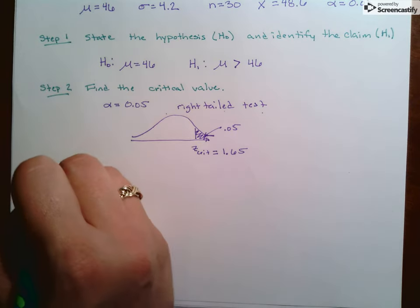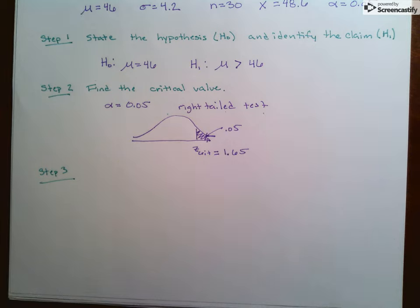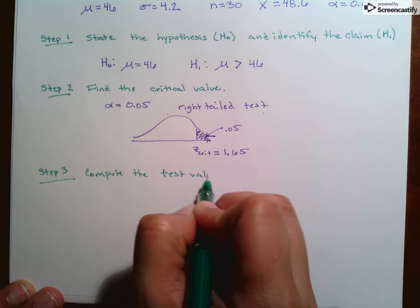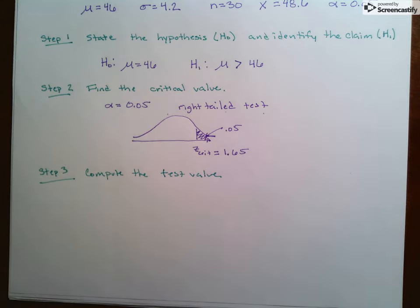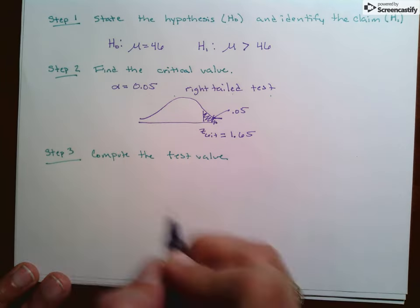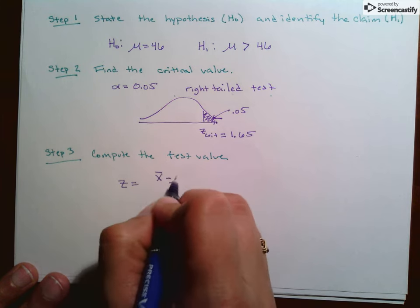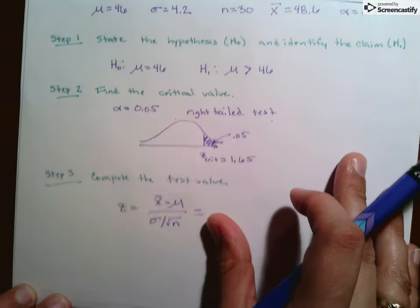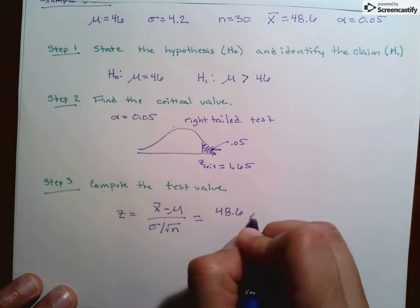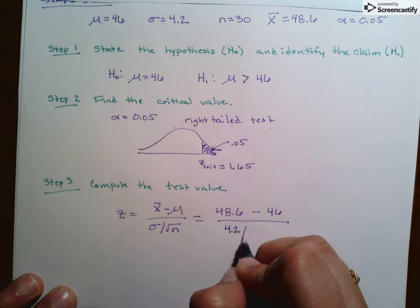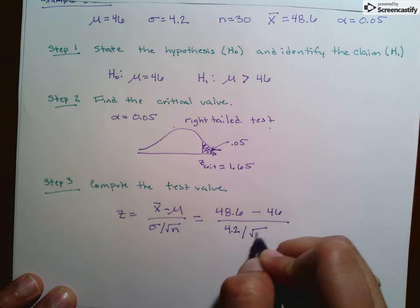Step three is compute the test value. We said we were in a Z-test, and we already talked about our test value was going to use this formula. Z equals X-bar minus mu over sigma over the square root of n. So we just fill in everything we know. We know X-bar is 48.6. We know mu is 46. Sigma is 4.2, and our n is 30.